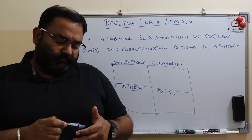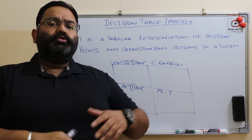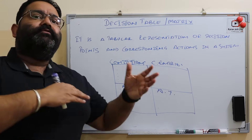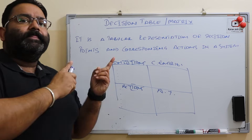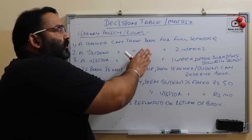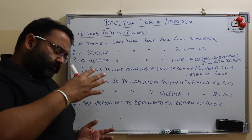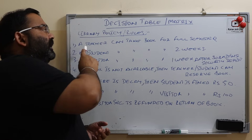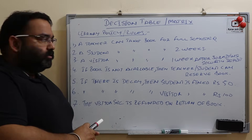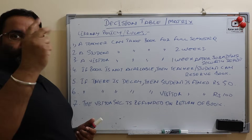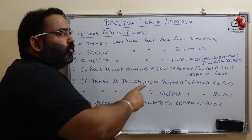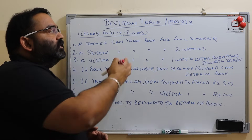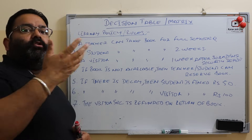Now we are going to take the example of our library system. These are the library policies. A teacher can take a book for a full semester. A student can take a book for two weeks. A visitor can take a book for one week after submitting a security deposit. These are the rules for who can take a book and for how long.